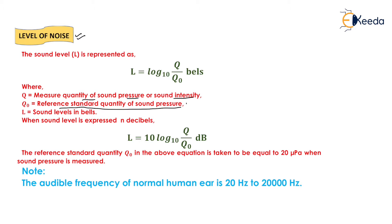This value is very important because GATE has asked questions from this particular portion, that is the reference standard quantity of sound pressure. The reference standard quantity in the above equation is taken to be equal to 20 micro Pascals when sound pressure is measured. So the value of q0 will be equal to 20 micro Pascals. One note is that the audible frequency of normal human ear is 20 Hz to 20,000 Hz.